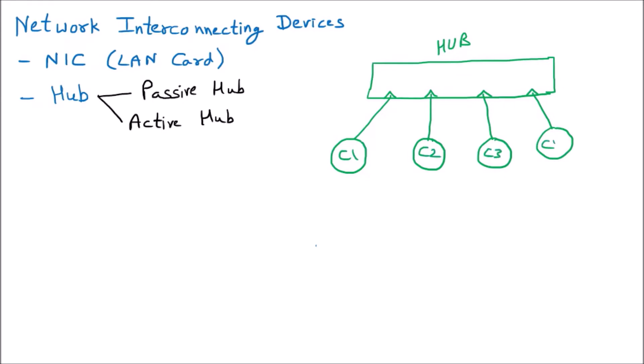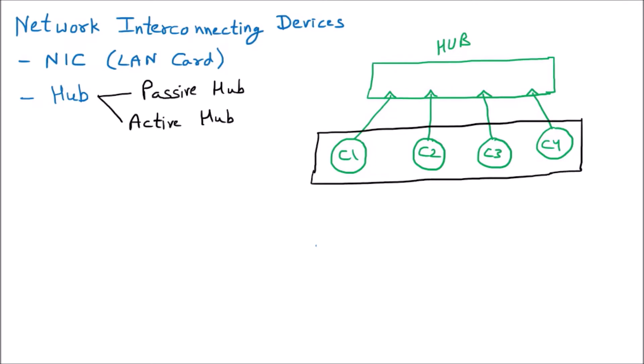Four computers — C1, C2, C3, and C4 — can be easily connected with that hub. These four computers are connected with each other with the help of the hub, and they are working like a LAN — Local Area Network — because the hub is a networking device and also a LAN device.